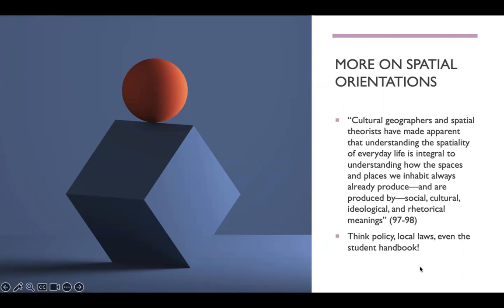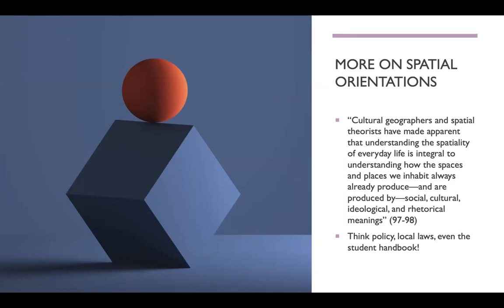Think about policies, local laws, or even a student handbook for how you interact with, let's say, UD's campus. There are particular policies that govern how the spaces can be used, when you need to book a space, things like that. There are local laws that govern maybe where we should be drinking outside or having our loud study parties together. And even the student handbook — these things are just pieces of technical writing, just words really on a page that govern how we're allowed to interact with the space that we're given.